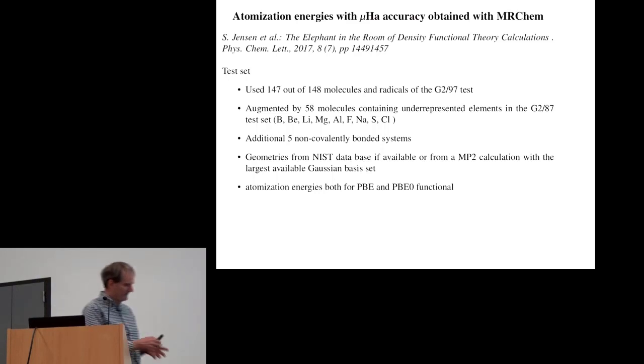We did those calculations for a test set that contained essentially all molecules from the Gaussian test set. In this Gaussian test set many elements are underrepresented, so we added 58 molecules containing mainly those underrepresented elements. We also added a few non-covalently bonded systems. The geometries came from the NIST database, or when not available, we did MP2 calculations with the very largest possible Gaussian set. We calculated atomization energies for PBE, PBE, and PBE0 functional.